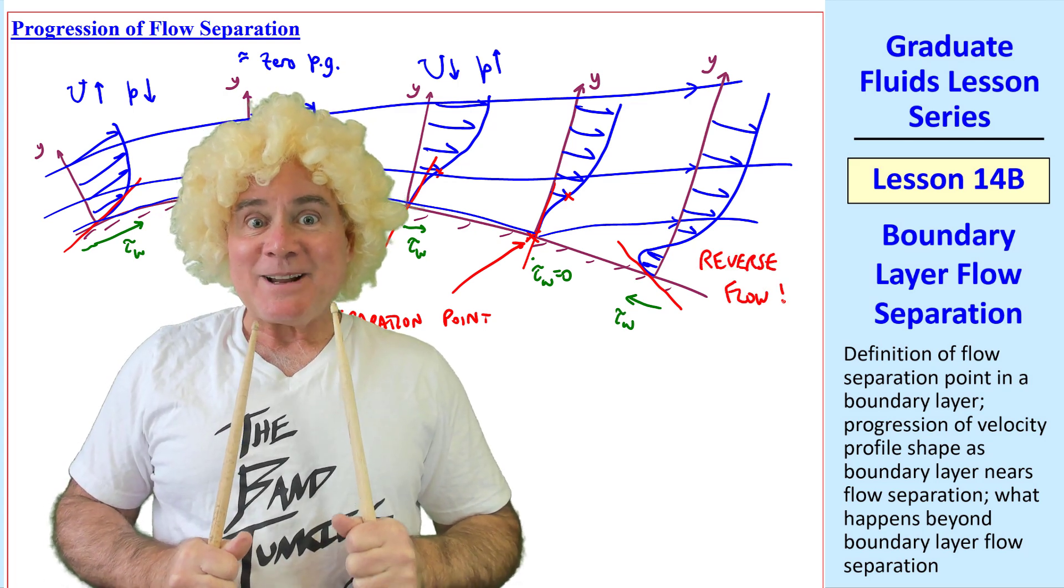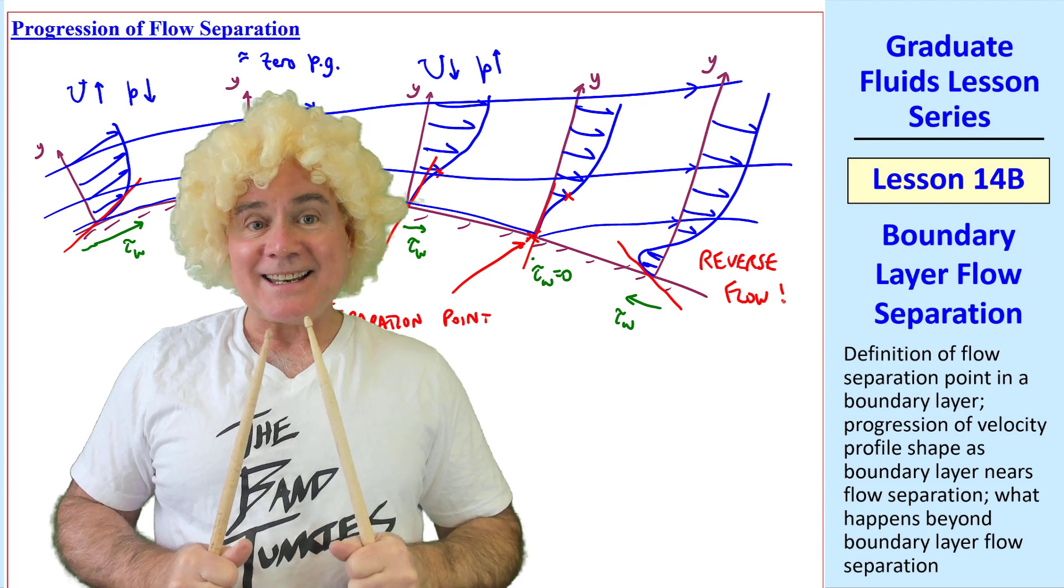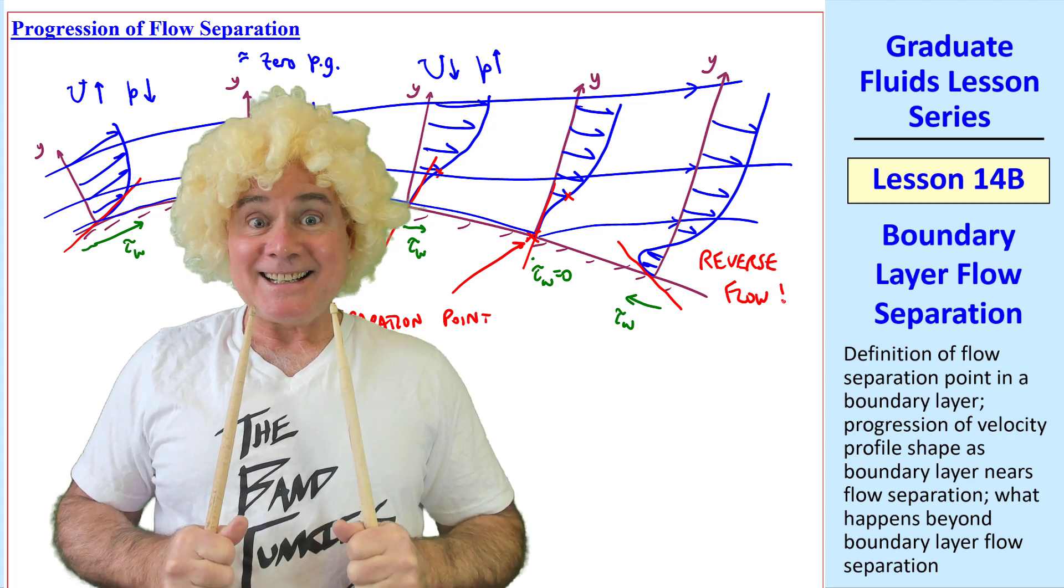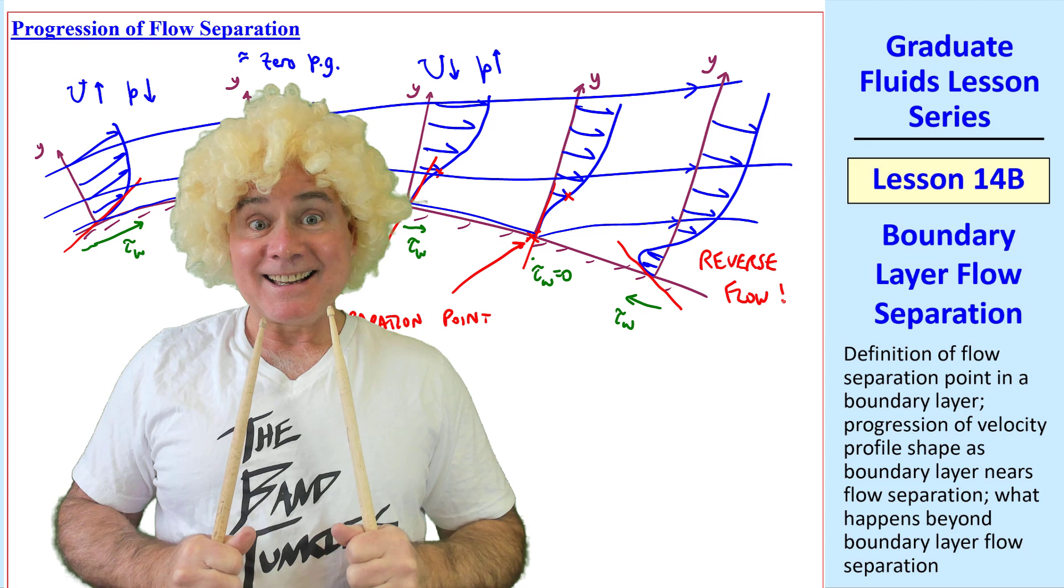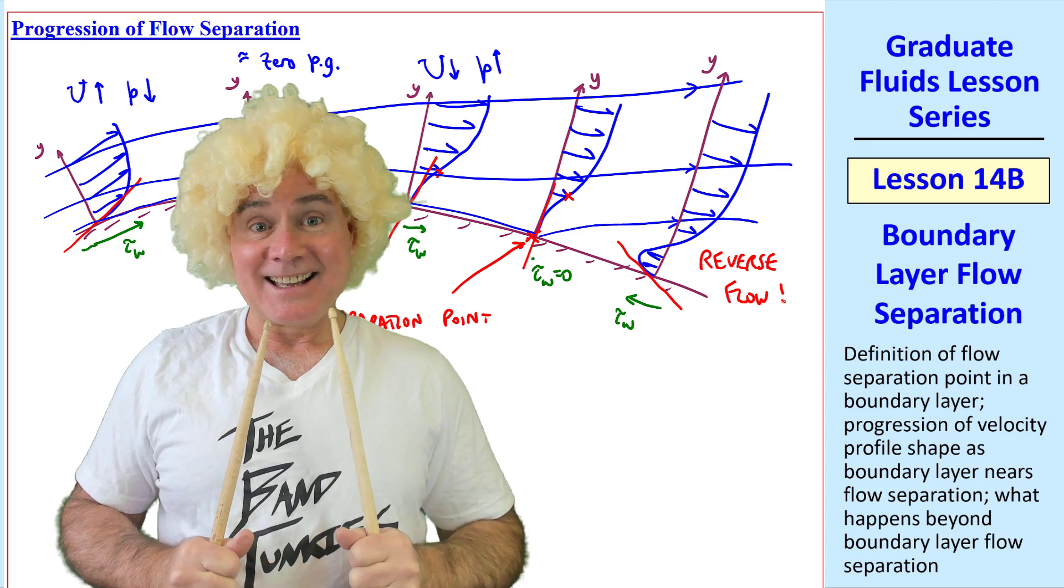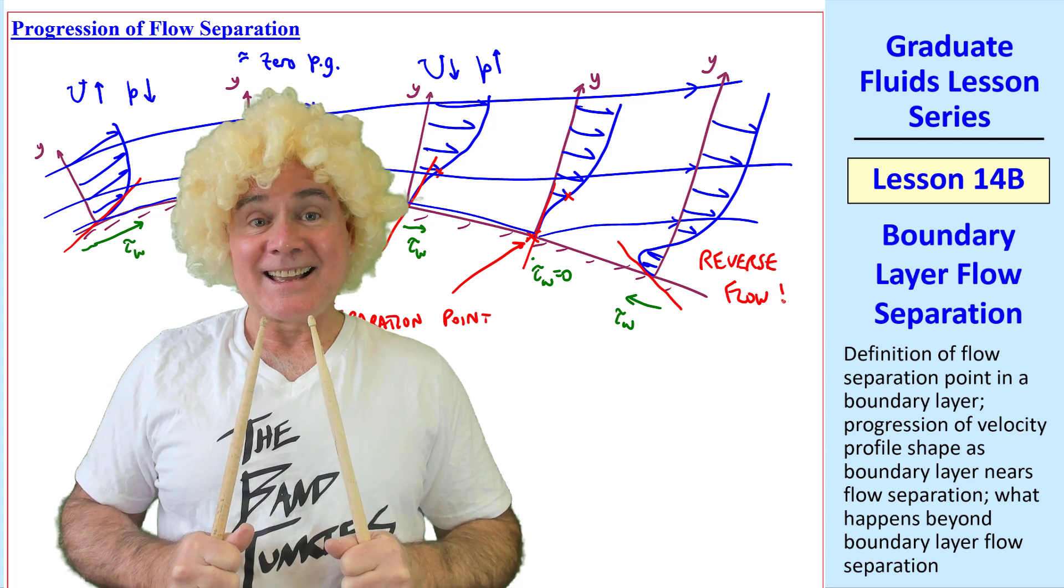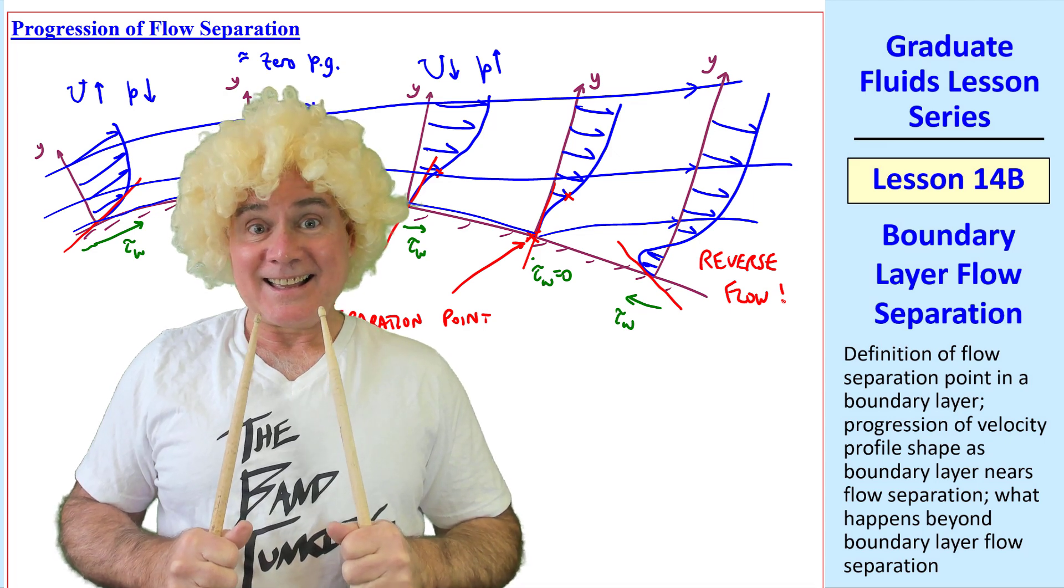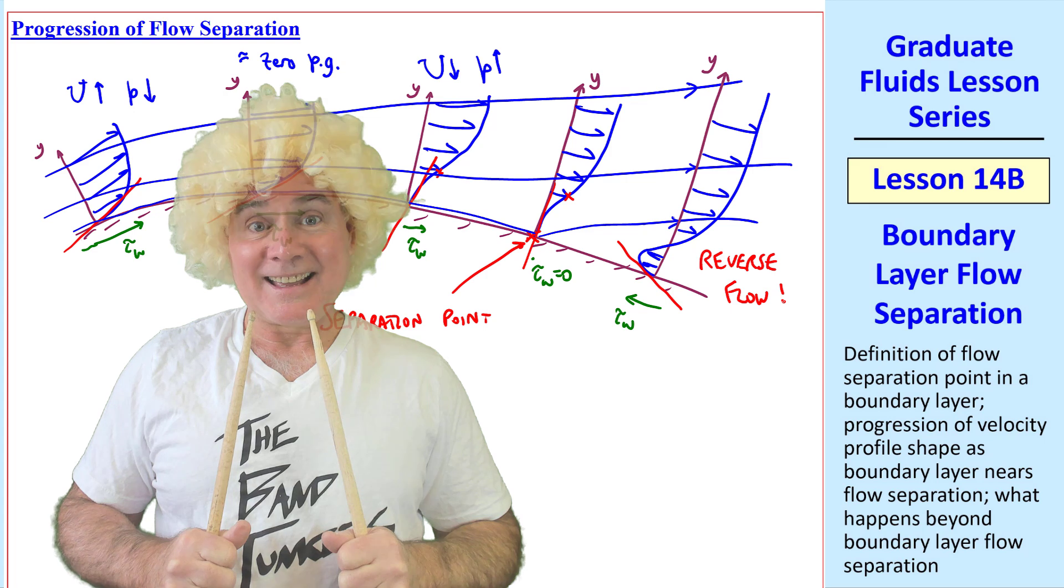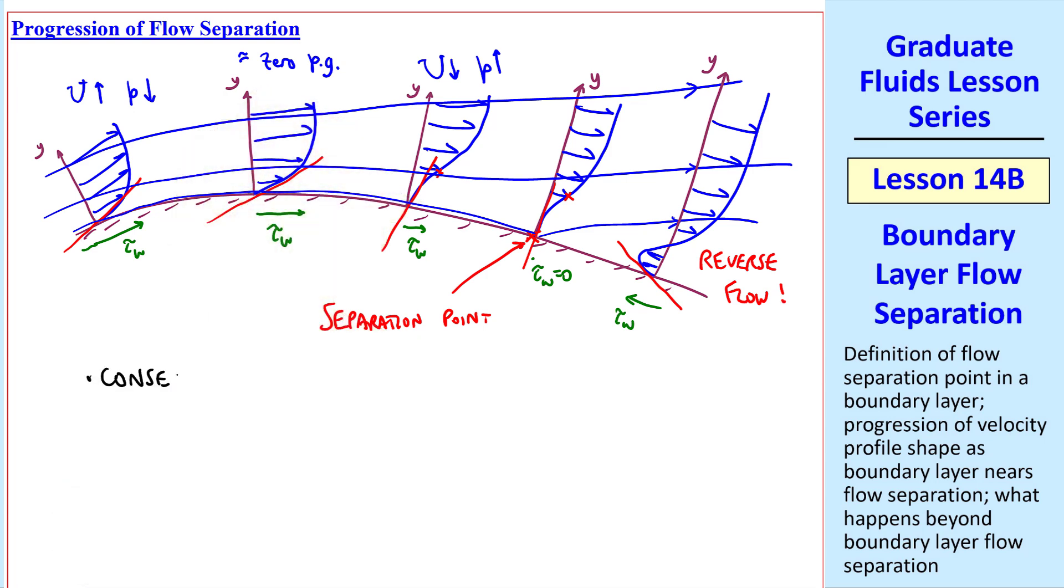But sir, when tau w is backwards like that, isn't that good? Isn't it like negative drag? Well, BJ, that's true for skin friction drag. When the flow separates, pressure drag goes way up, and that overwhelms any small negative drag you gain from the skin friction. In fact, let's look at the consequences.